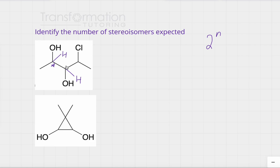This carbon has chlorine, a hydrogen, a methyl group on the right, and a large group on the left — four different groups. So this molecule has three chiral carbons, three stereocenters. Using the formula 2^n, that gives us 2^3 = 8 stereoisomers.